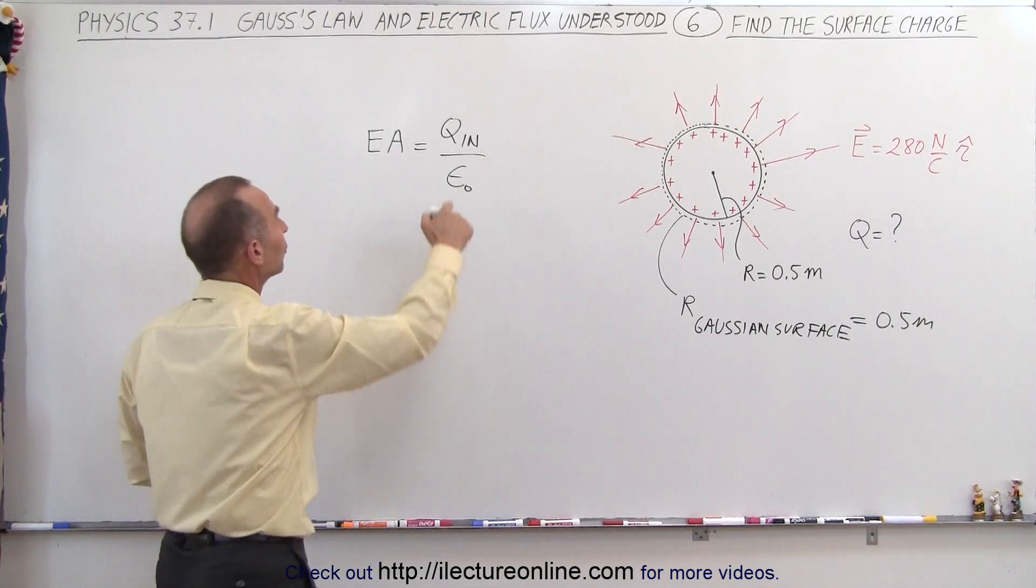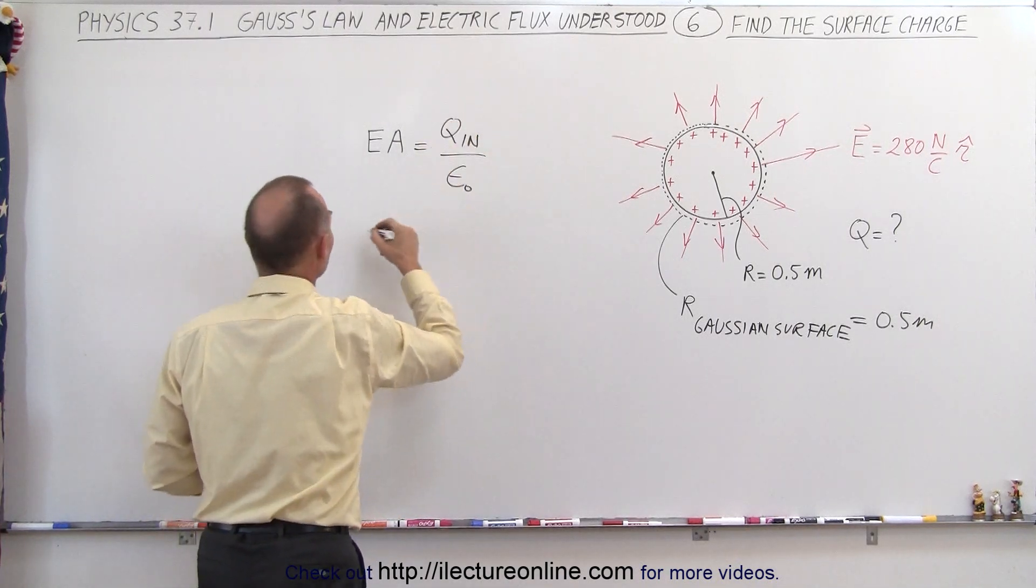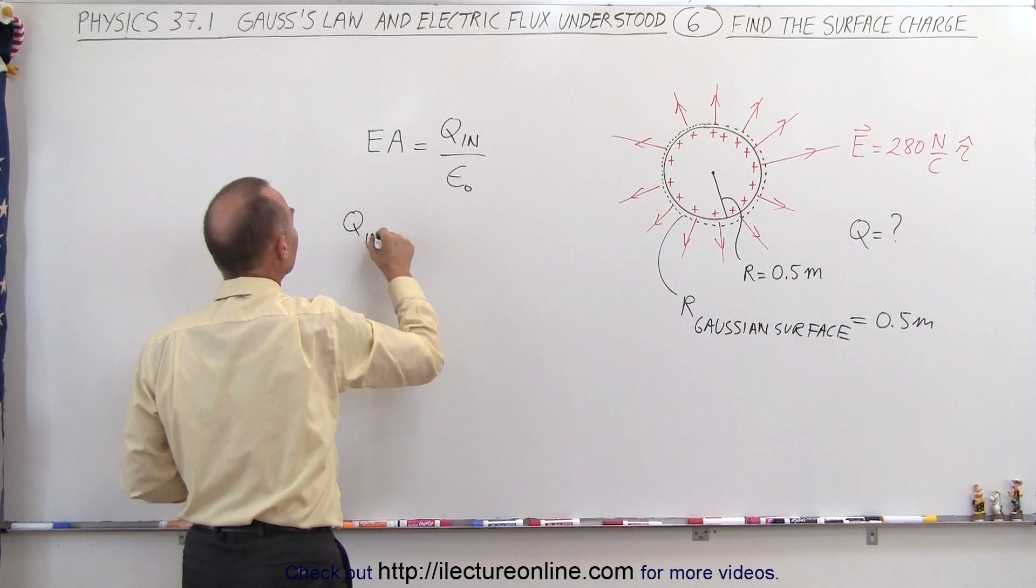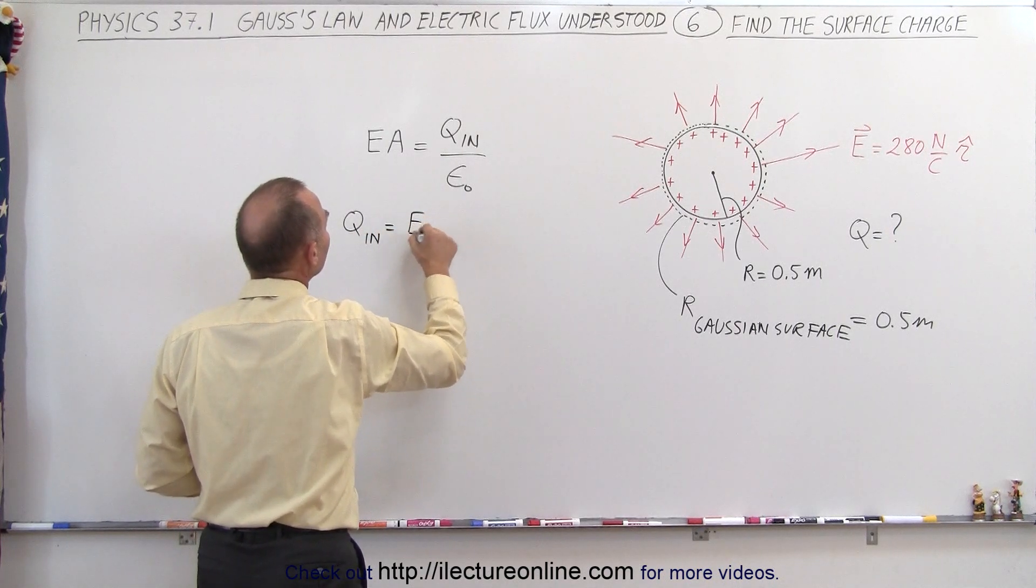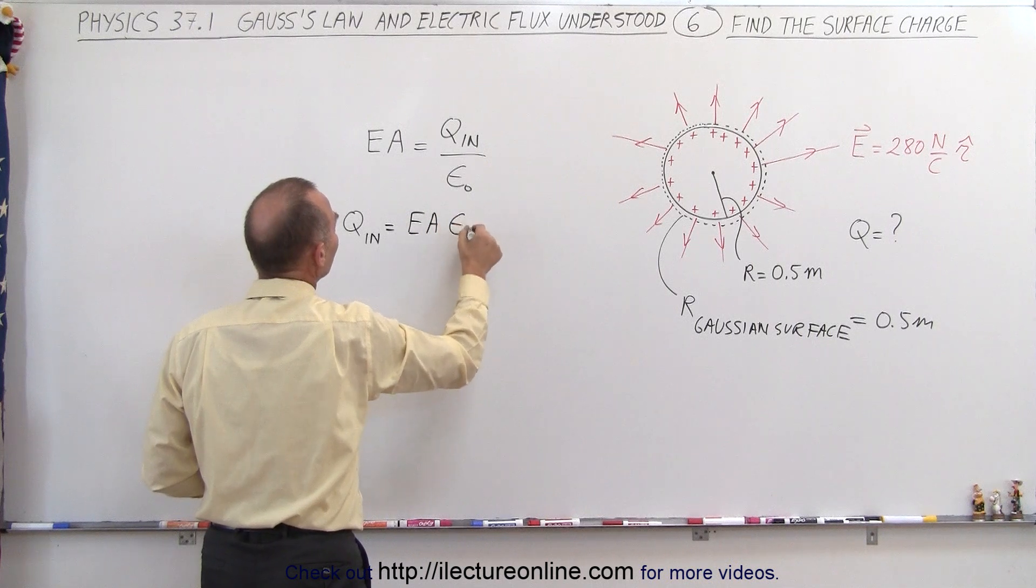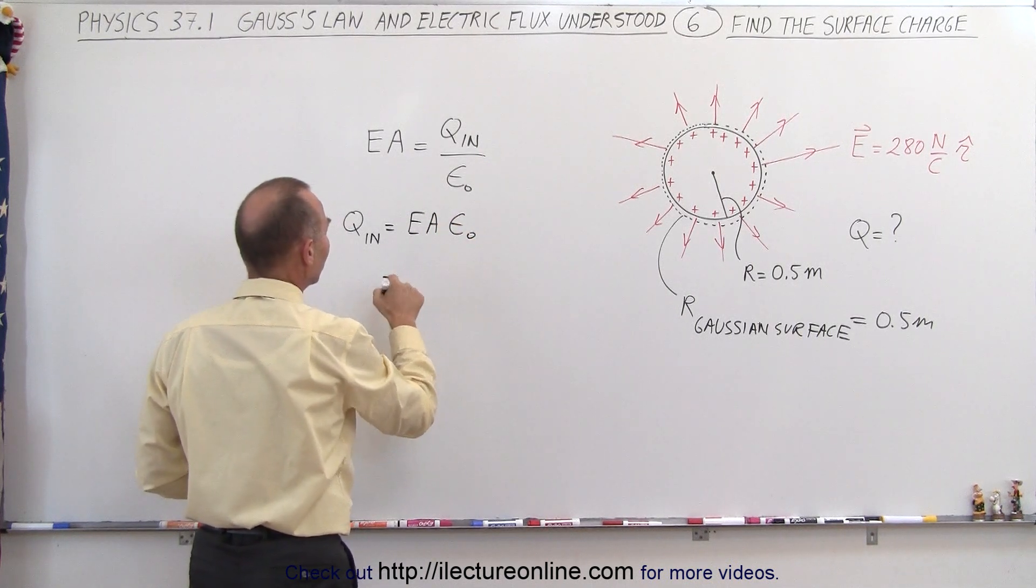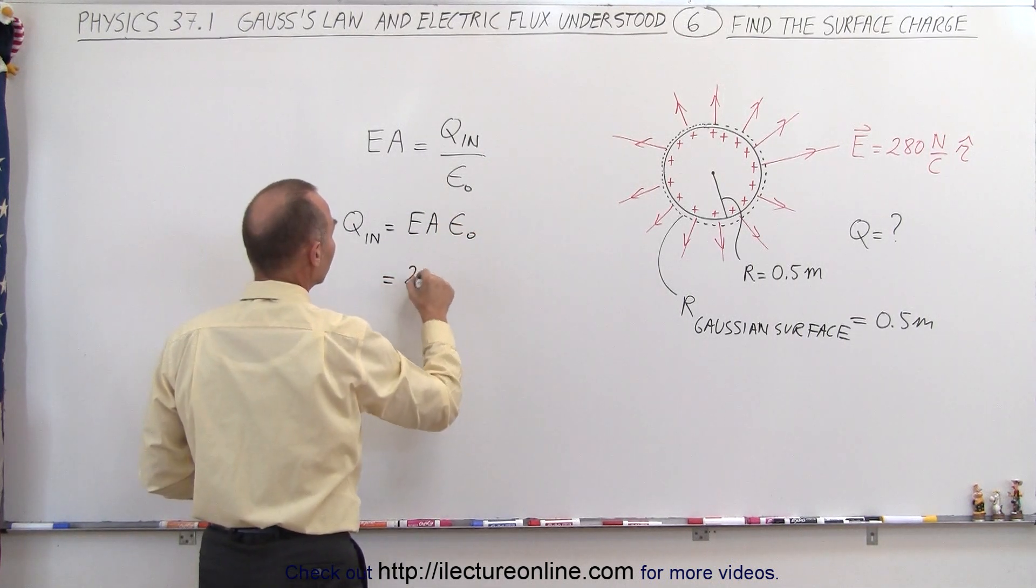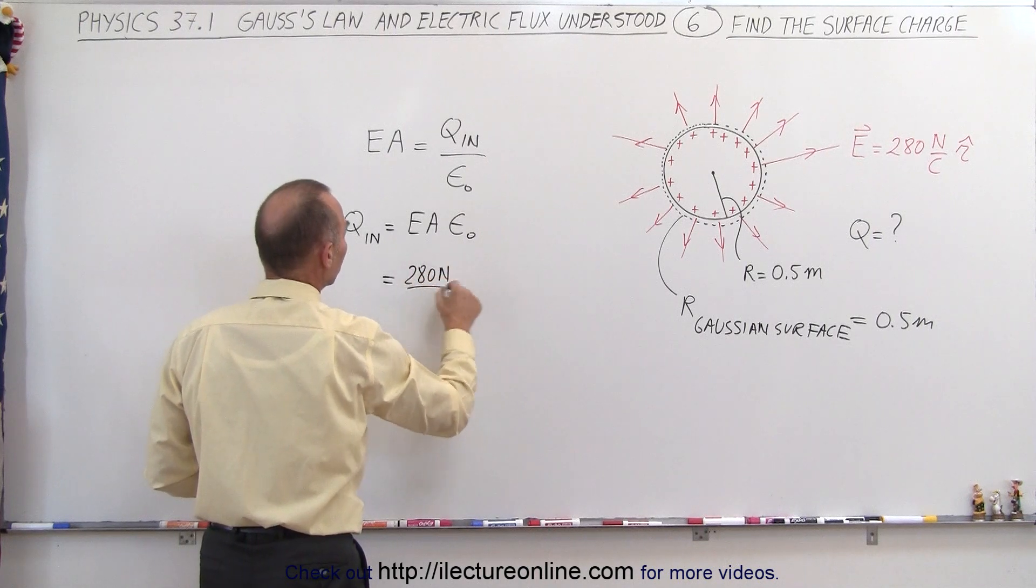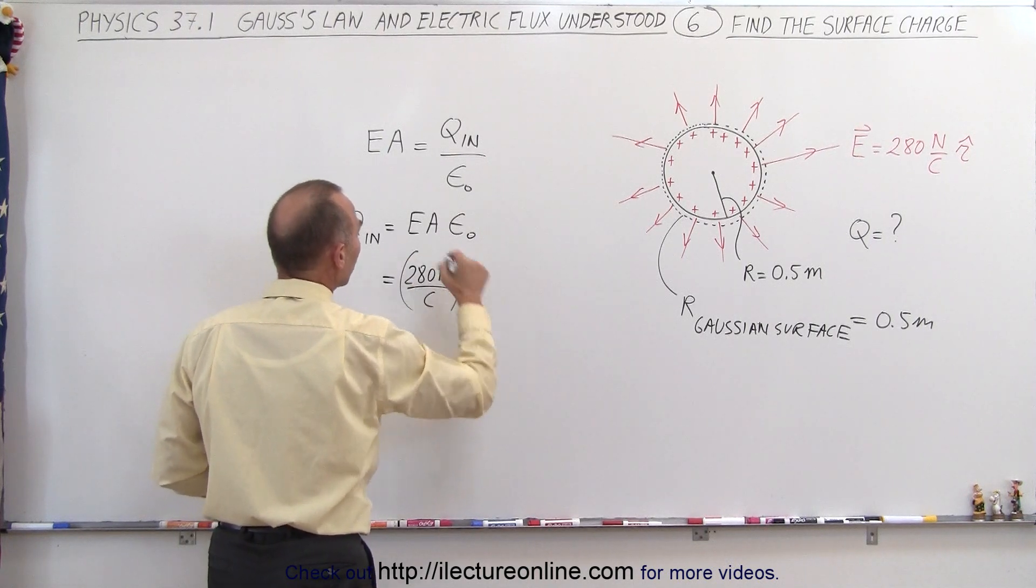If we do that, then what we're going to do here is solve this for Q inside. So we can say that Q inside is equal to E times A times epsilon nought. The electric field strength is given to us at 280 newtons per coulomb, but what is the area?